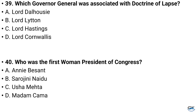Question number 39. Which Governor General was associated with the Doctrine of Lapse? Option A: Lord Dalhousie, Option B: Lord Lytton, Option C: Lord Hastings, Option D: Lord Cornwallis. And the answer is Option A: Lord Dalhousie.